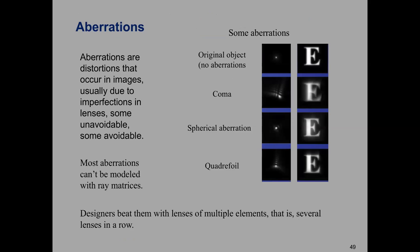Different types of aberrations can be seen by looking at what happens to an image of a letter E. These can't be modeled with ray matrices — they're caused by breaking the assumptions we made. Spherical aberration is an all-around spherical blur on the object in an image, and it's always present if you're using a lens with spherical surfaces. The reason is that rays at large angles don't focus to the same focal point as rays at small angles, leading to a slightly out-of-focus image.